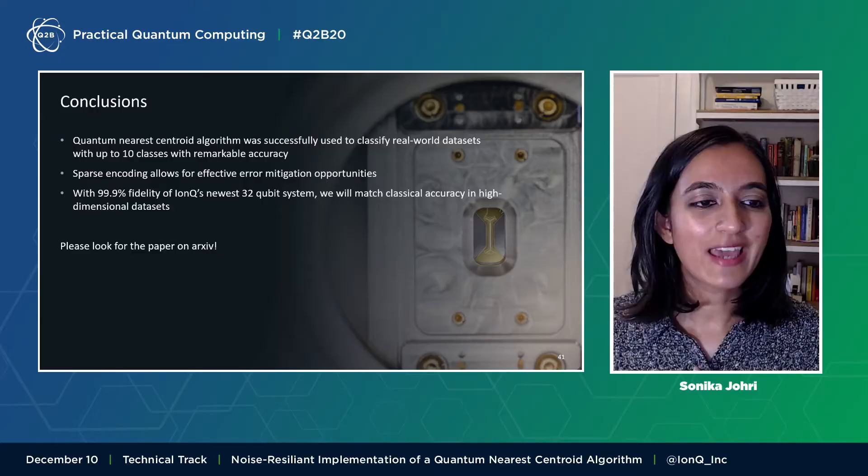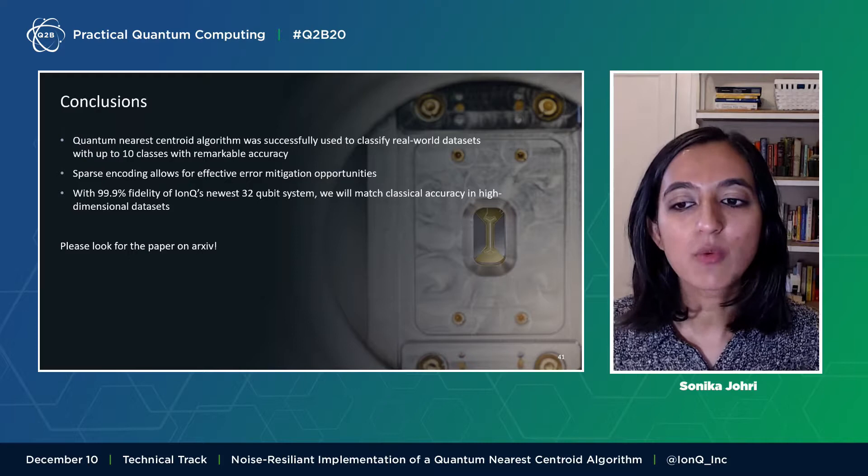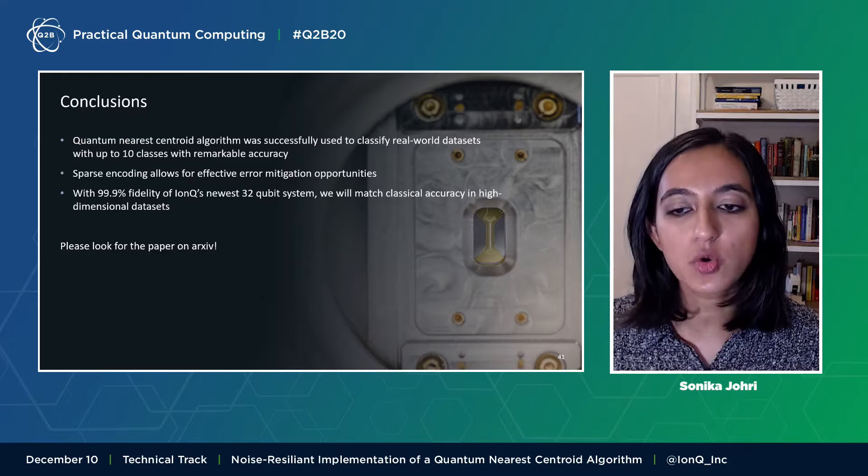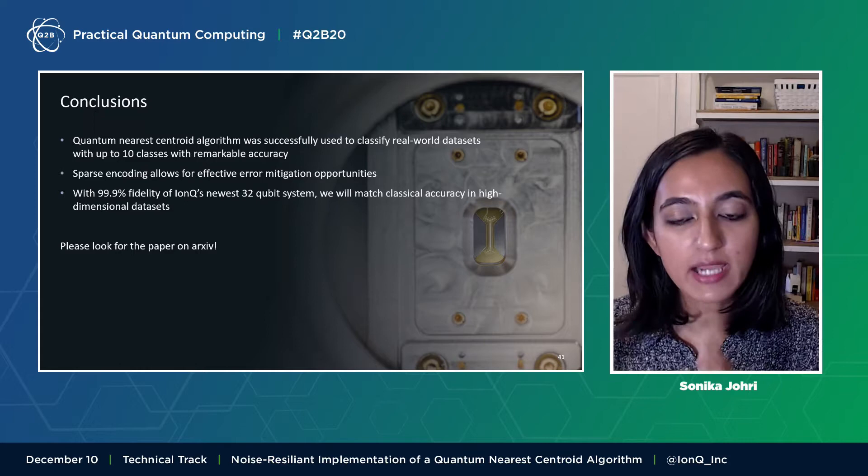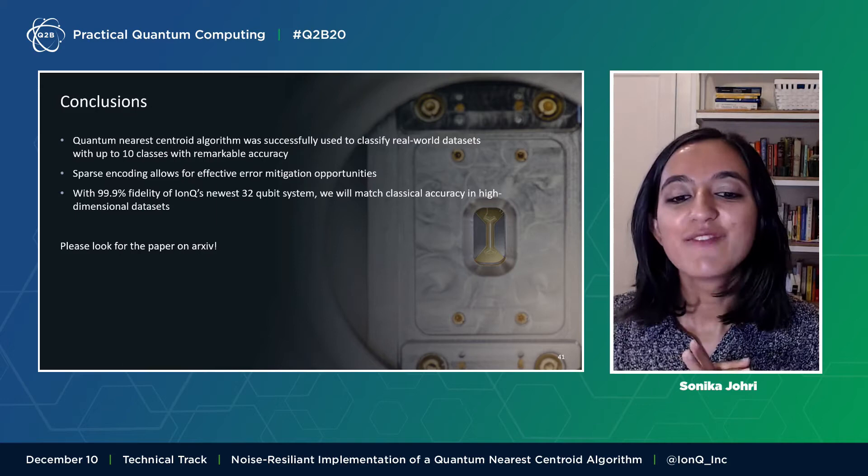And lastly, I would like to leave you with my conclusions. I showed you how the quantum nearest neighbor algorithm designed by QC Ware was implemented on IonQ systems and was successfully used to classify datasets with up to 10 classes with remarkable accuracy. One of the key design choices that allowed this success was the choice of a sparse encoding that allows for effective error mitigation. We are confident that with the 99% fidelity of IonQ's newest 32 qubit system, we will become competitive with classical classifiers, even on higher dimensional datasets. And lastly, by the time you watch this, our paper with these results will already be on arXiv. Please be sure to take a look. Thank you.